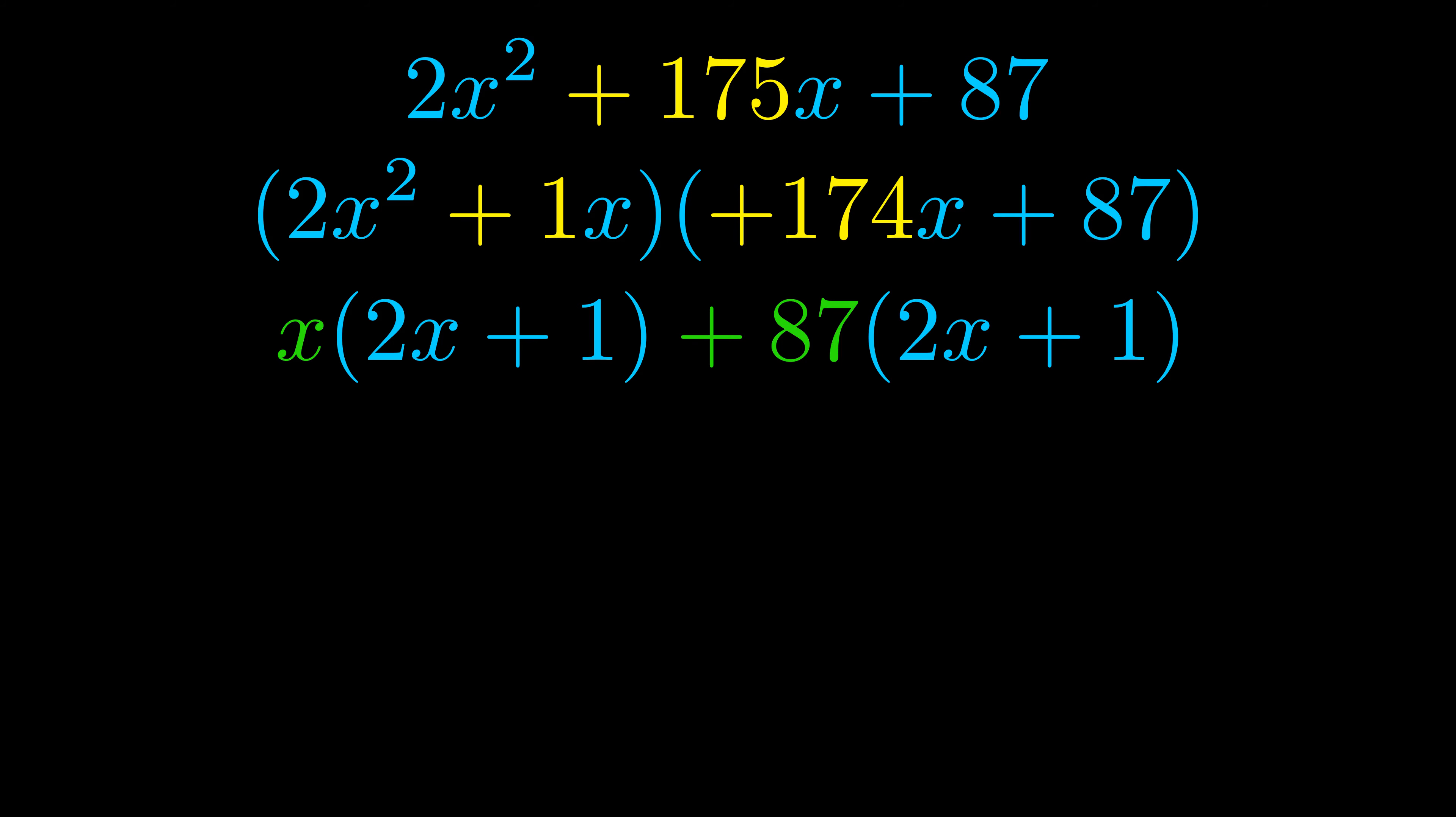Notice also how what remains inside of the parentheses is the same in both cases. The blue values are the same. Those blue values will become one of our factors and we will combine the two green values, the GCFs that we pulled out, to get the other one.